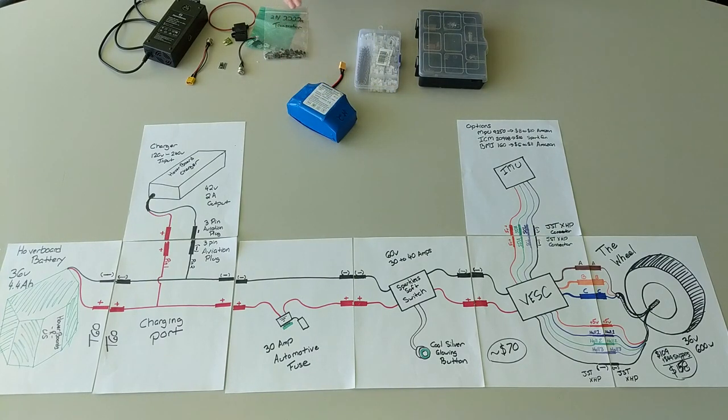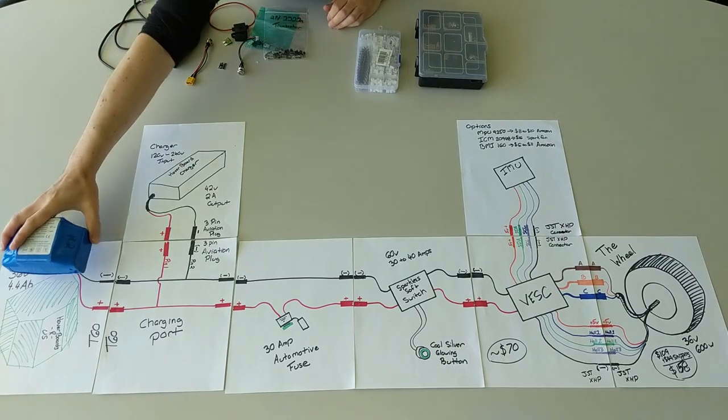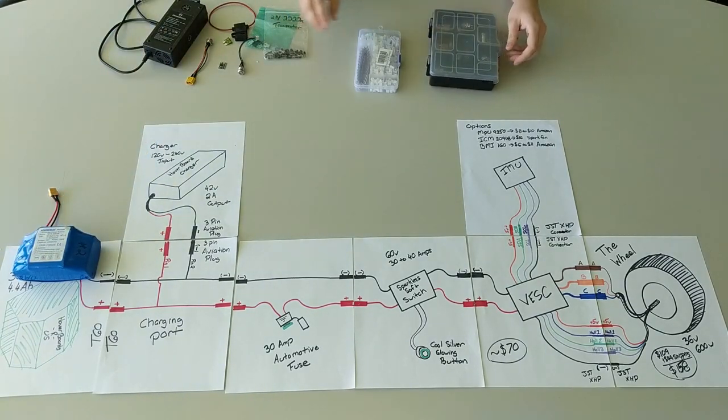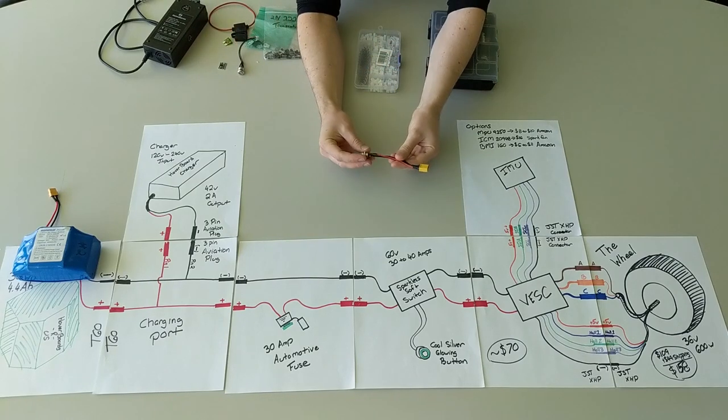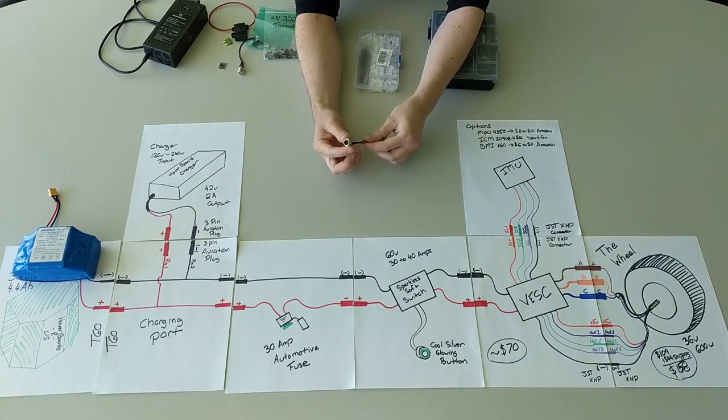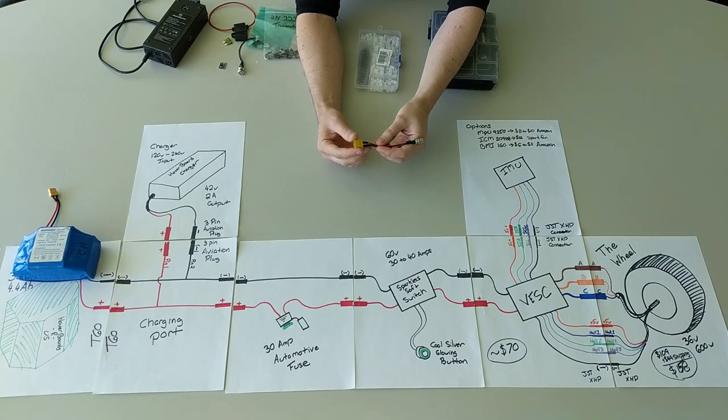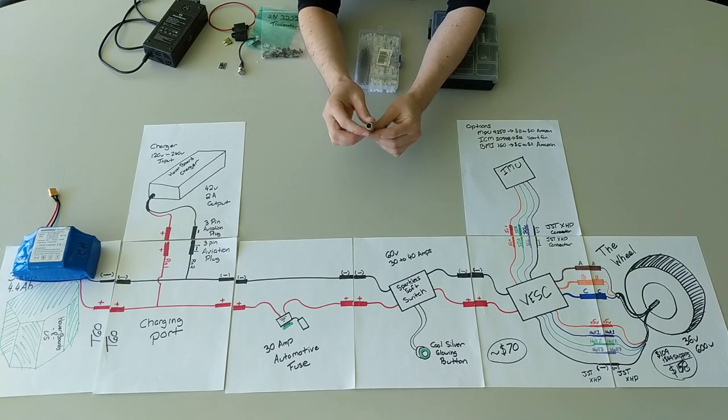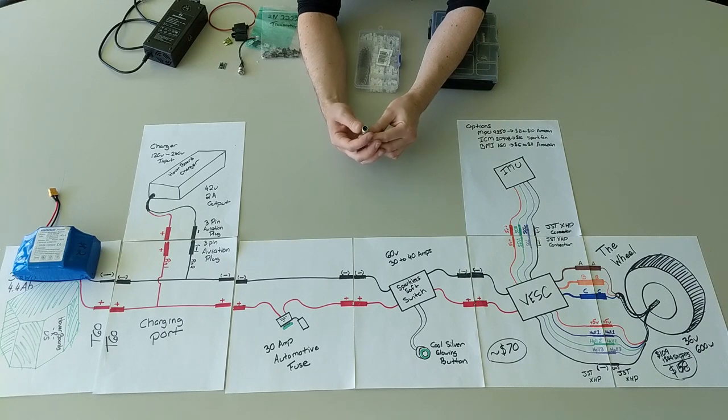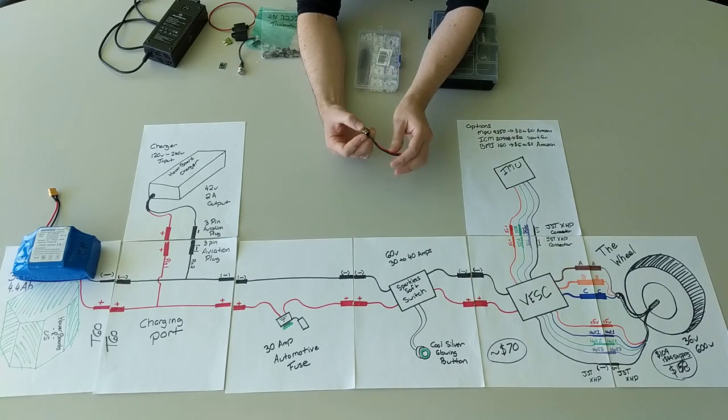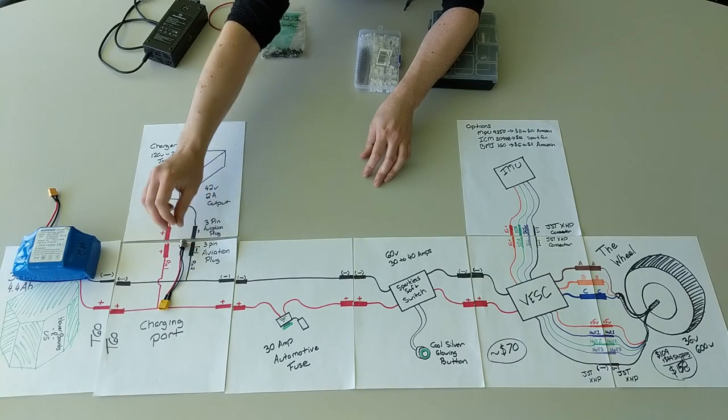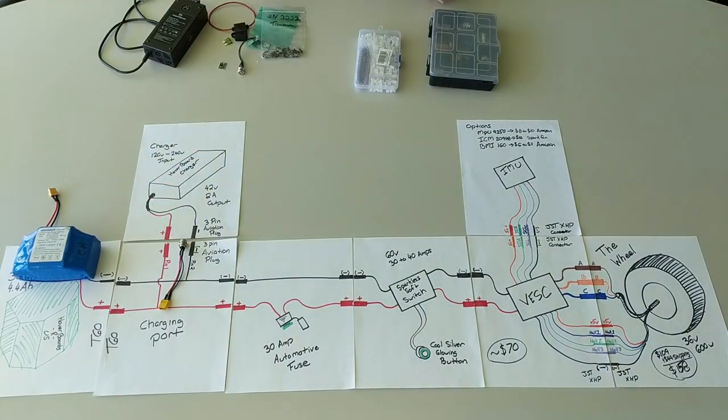The battery, which will live over here, is connected to the charging port which is what we've created here. The charging port uses a T60 connector to connect to the battery and on the other end it has what is commonly referred to as an aviation plug. This is a three pin version. I know there is a formal name for these, I don't actually know what it is, but in my experience and when you search for them on Amazon they are just called aviation plugs.